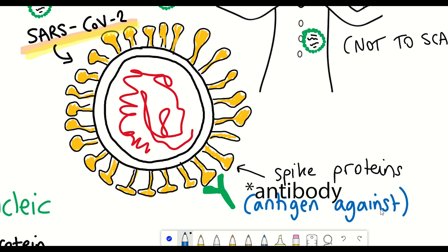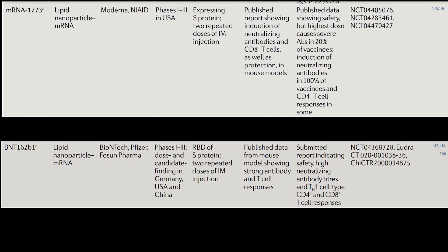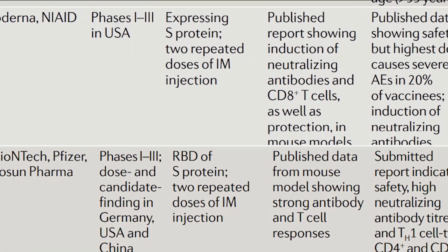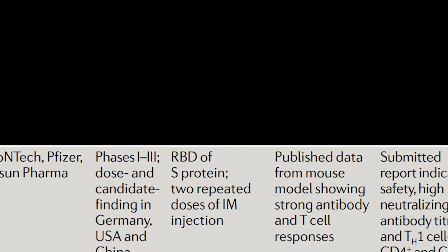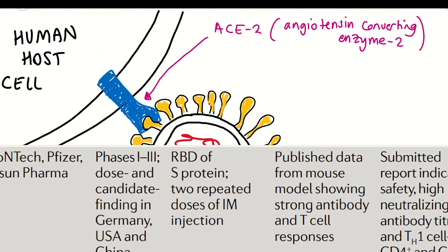So unsurprisingly then, the two major mRNA vaccines being produced by Moderna and Pfizer in collaboration with BioNTech are both developing mRNA vaccines that contain the mRNA that encodes antigens of the spike protein. And so the vaccines aren't identical between the two companies. The vaccine developed by BioNTech and Pfizer only contained information to produce the receptor binding domain of the spike protein.